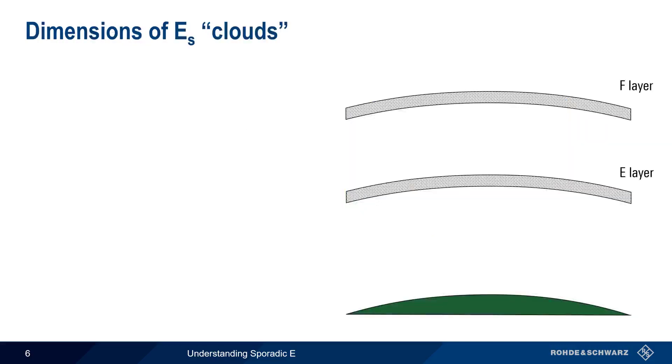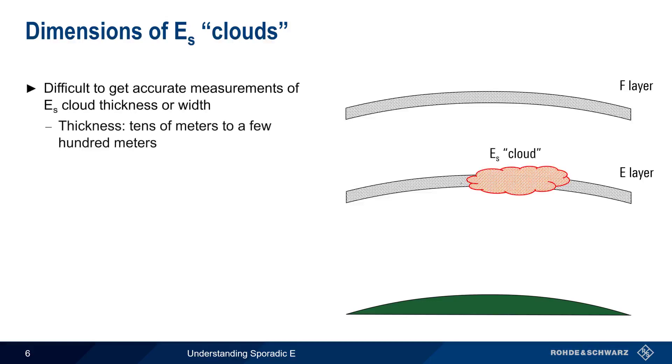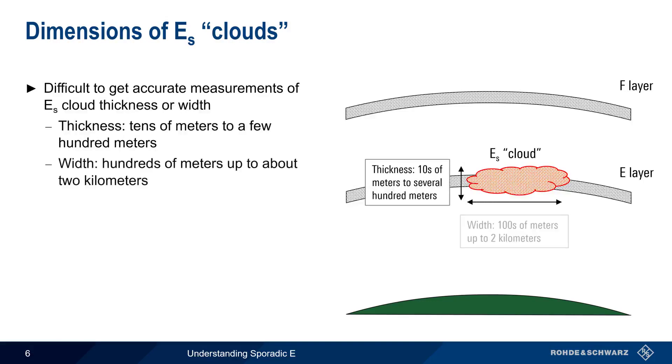The dimensions of these clouds of increased E layer ionization are difficult to measure. They usually are tens of meters to a few hundred meters thick, and from several hundred meters up to two kilometers wide.